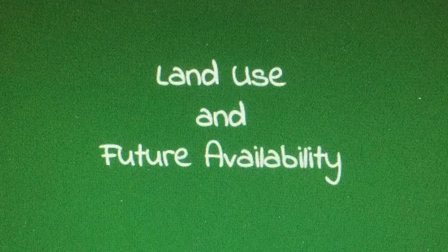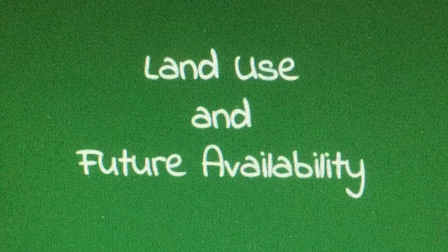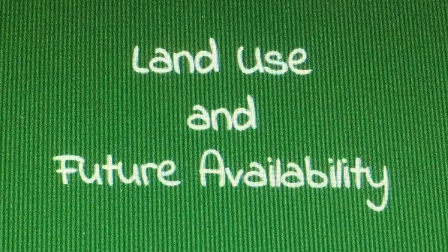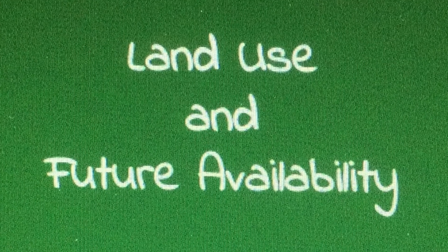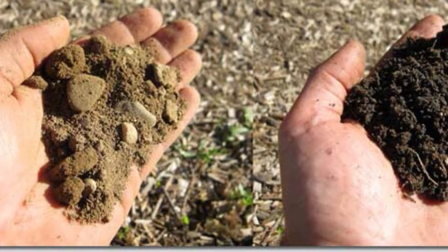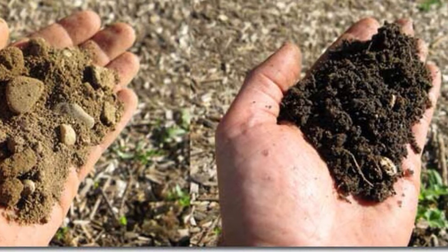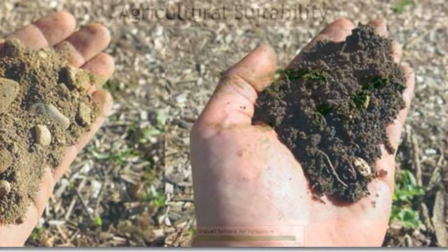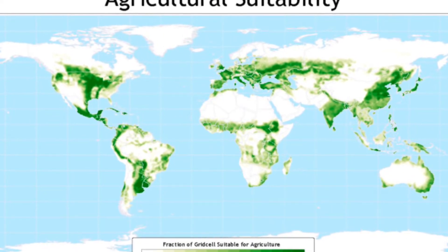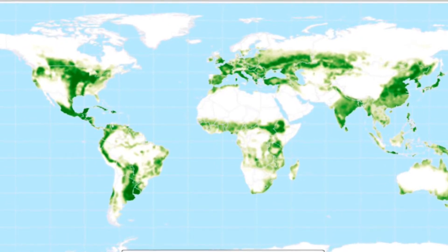Now that you've completed part one, let's move on and look at land use and possible future availability — or lack of availability. You have to remember that not all land is perfect for agricultural processes. It has to be sustainable, with fertile soil, adequate precipitation, and good growing temperatures. As you can see by the map, we don't have a lot of land mass suitable for agricultural processes.